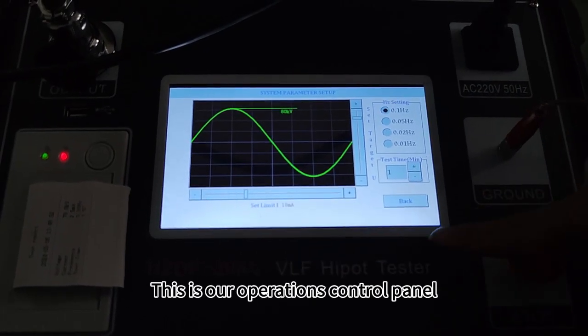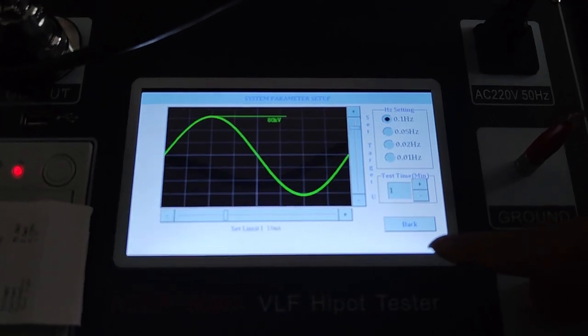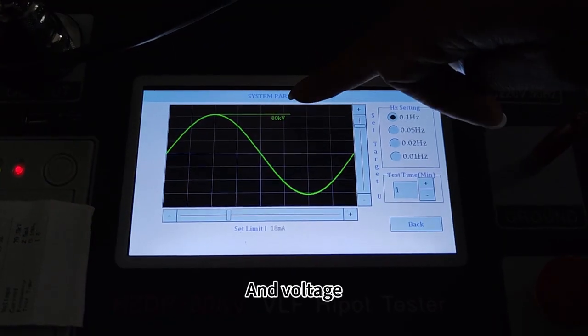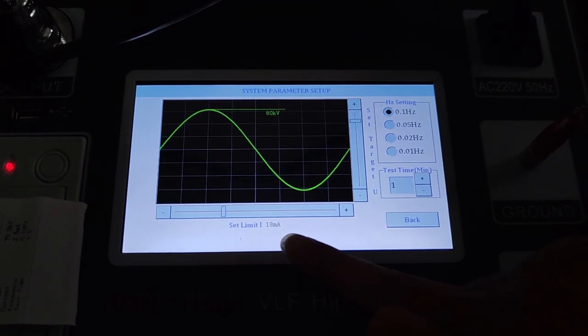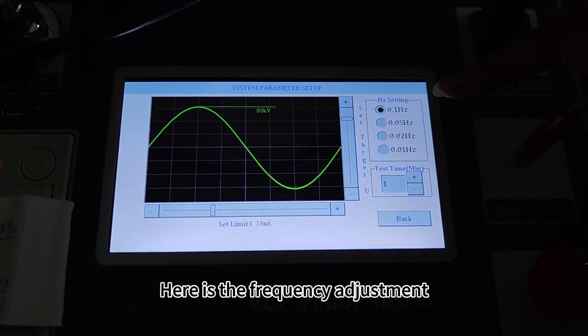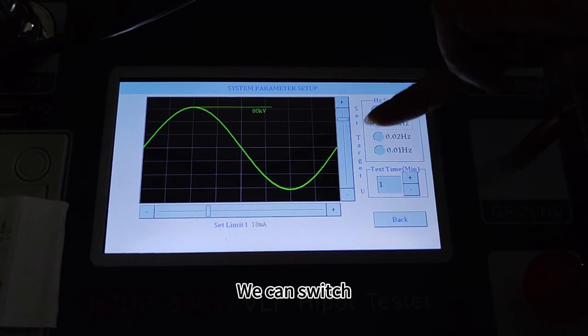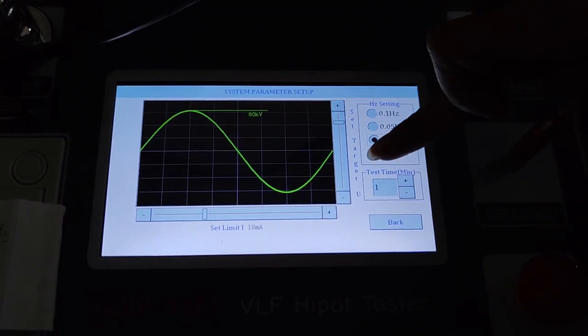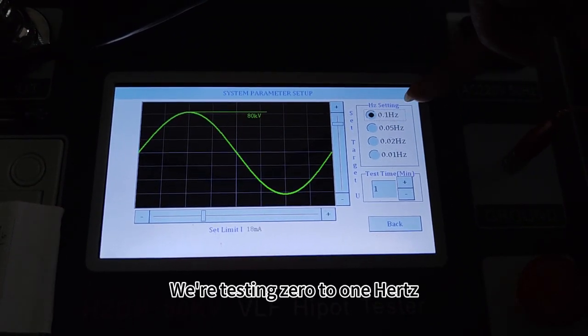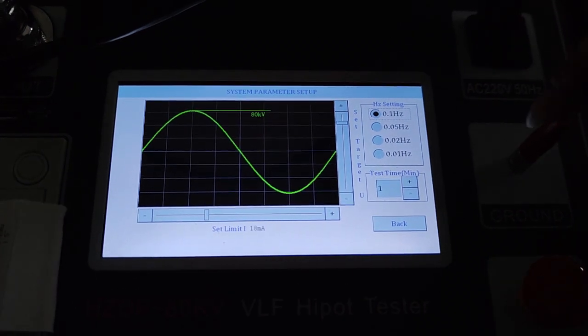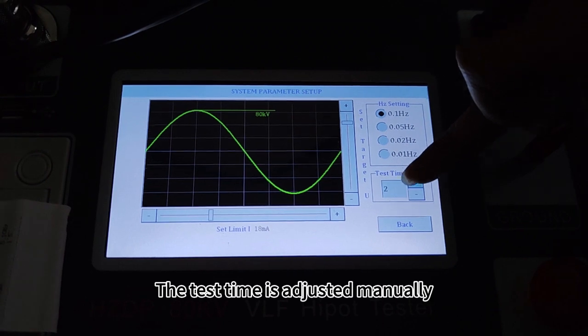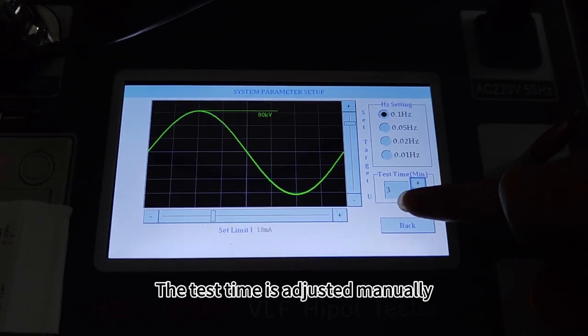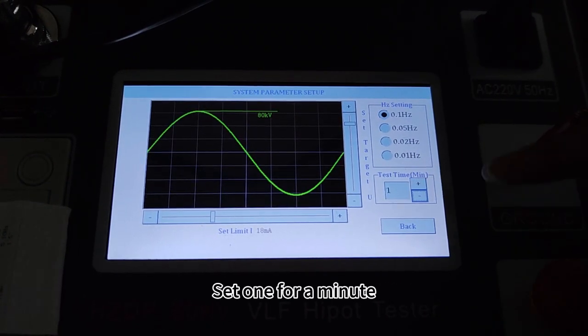This is our operations control panel with voltage, leakage current, and time displays. Here is the frequency adjustment. We can switch. We are testing at 0.1 hertz. The test time is adjusted manually. Set for one minute.